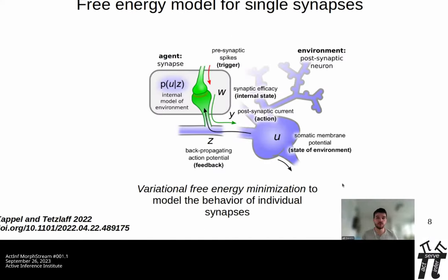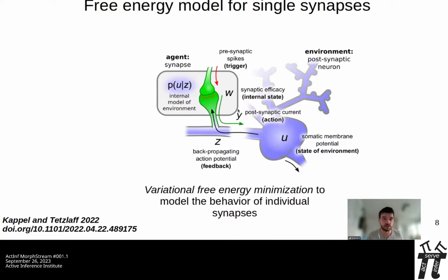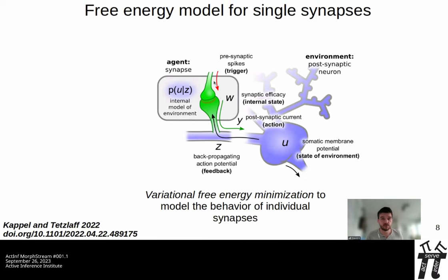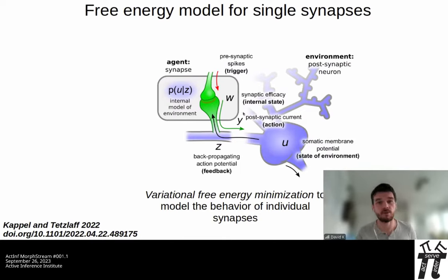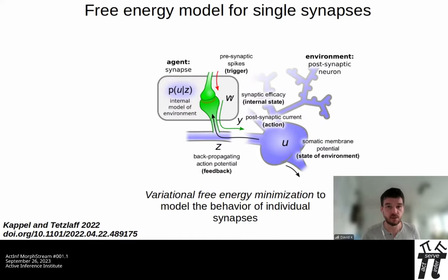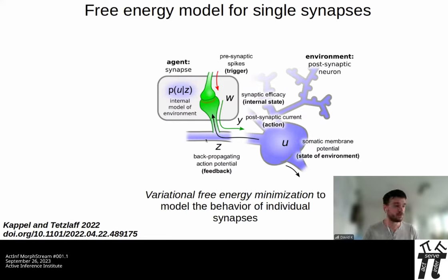If we look at the neuron and synapse, we find a very similar picture. A single synapse has an internal state — the synaptic weight. When triggered by a presynaptic spike, it generates a postsynaptic current that propagates to the soma, which we cannot directly observe because it's too far away. But we see feedback via the backpropagating action potential — a binary variable telling us whether the neuron has spiked. This is exactly the same framework, and we can use the same mathematics to solve it.